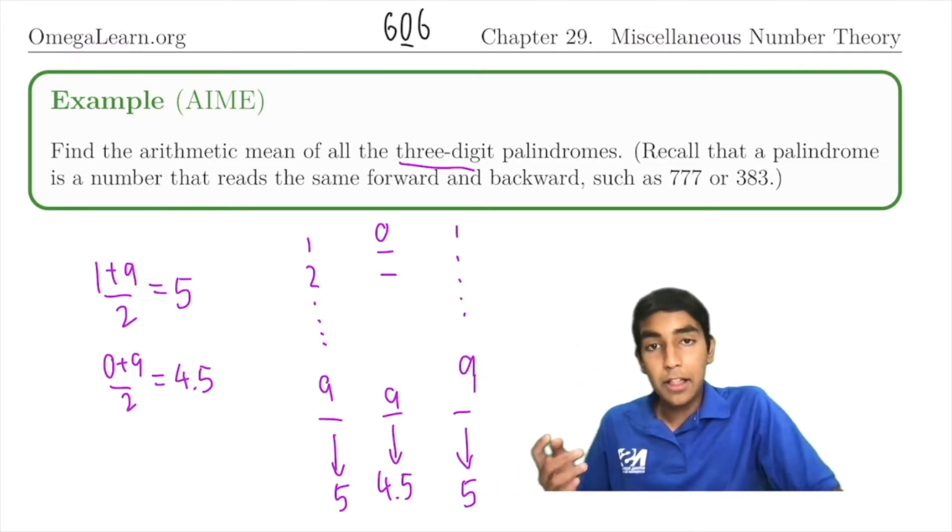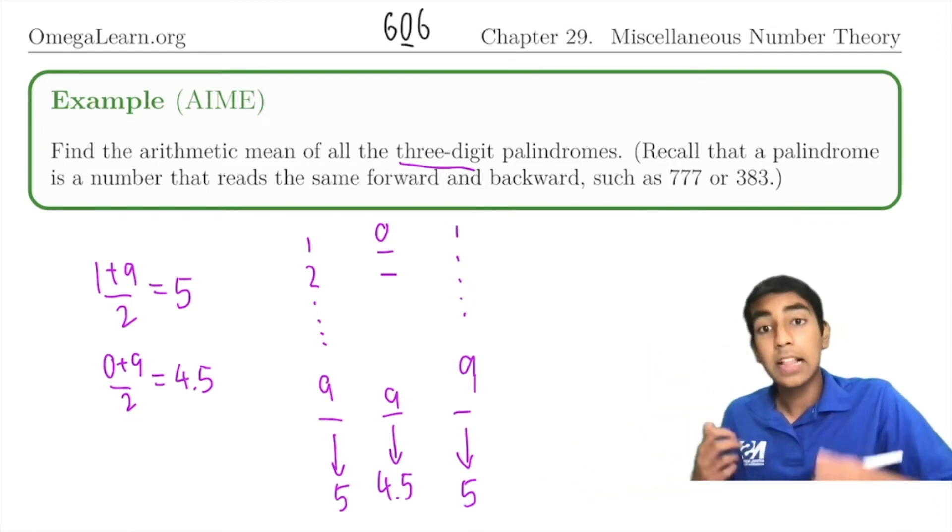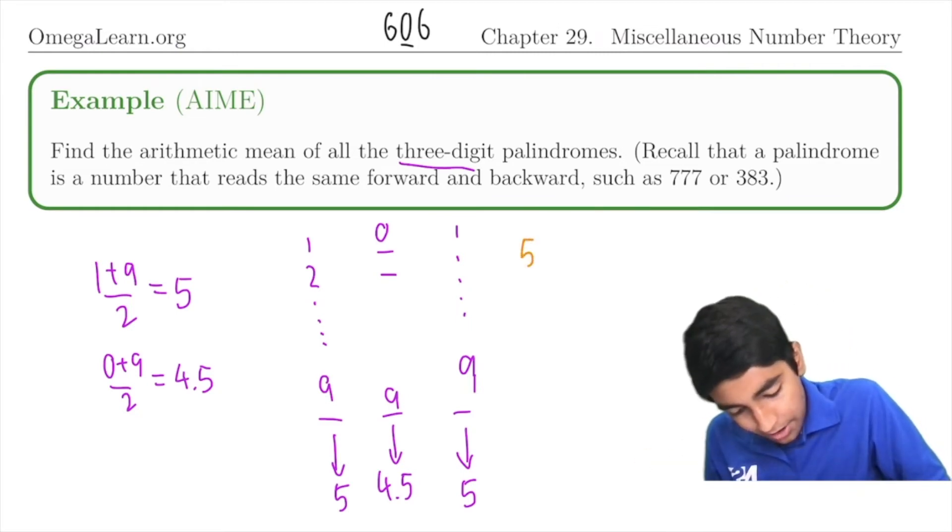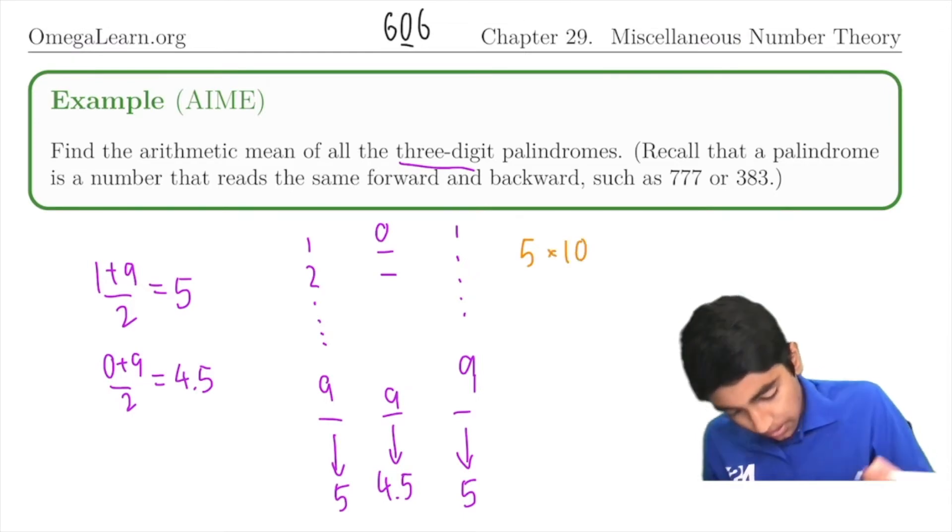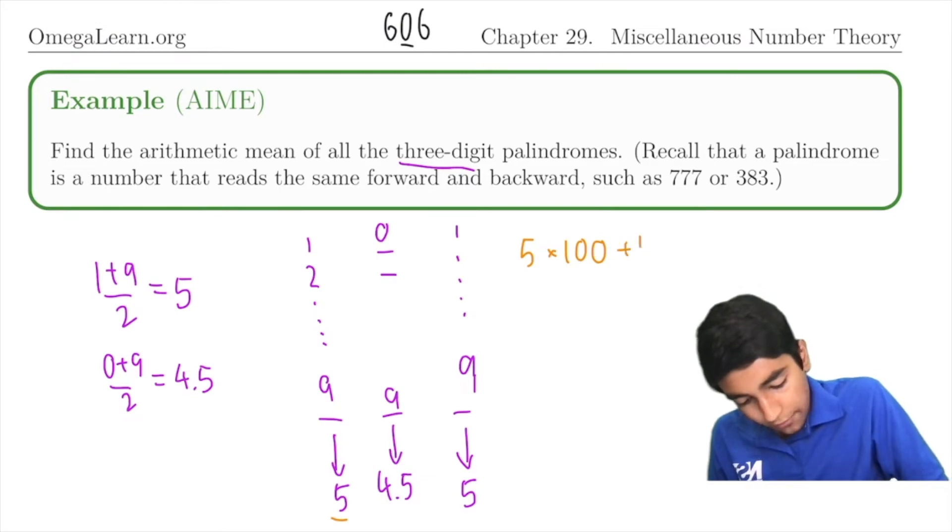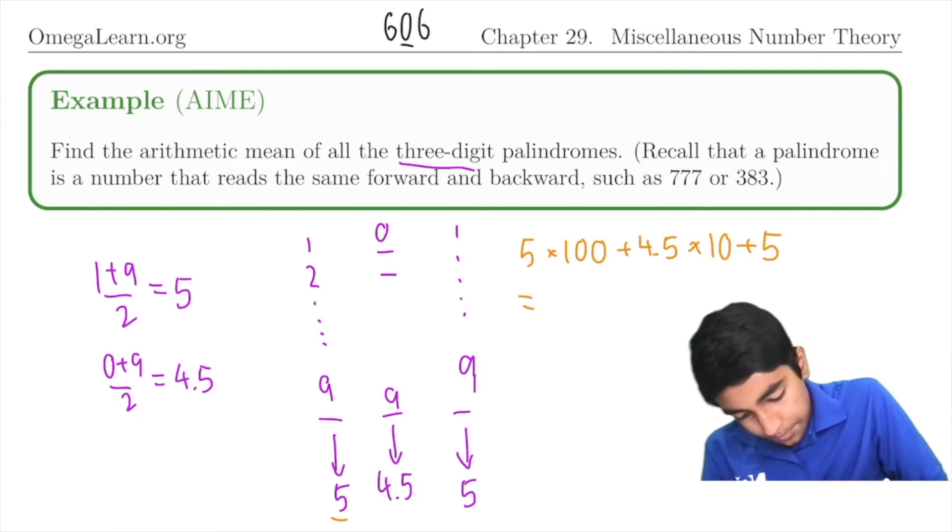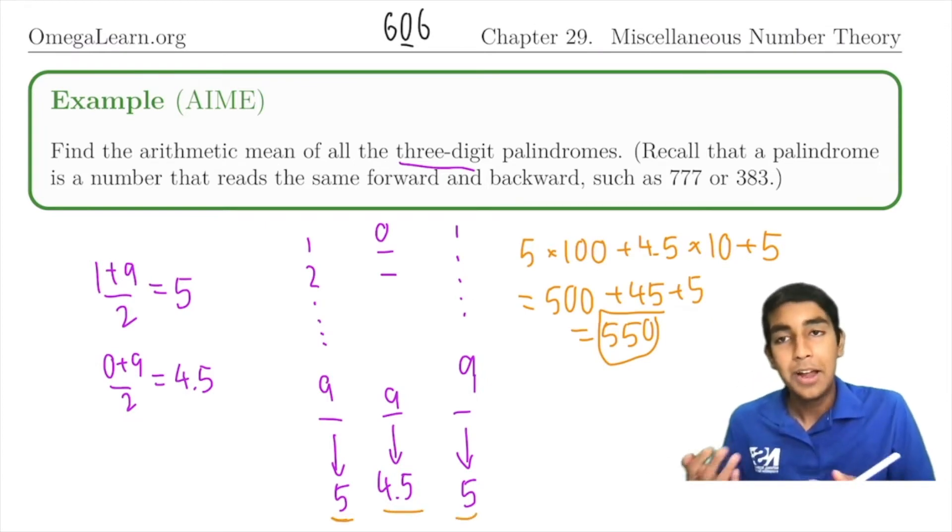So the average value of the palindrome in total is just going to be the hundredth digit times 100, the tenth digit times 10, and plus the units digit. So that's 5 × 100, plus 4.5 × 10, plus 5, which is 500 + 45 + 5 = 550. So we just multiply all the averages for each digit to get the average palindrome. Pretty cool problem.